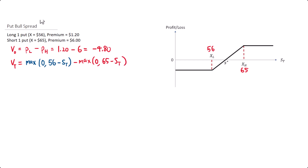The definition of profit is the difference between the value at expiration and the initial value. To find the maximum gain, you can observe from the payoff profile that the maximum gain occurs when the share price is greater than 65, which is the strike of the highest strike put.